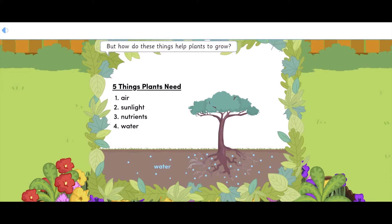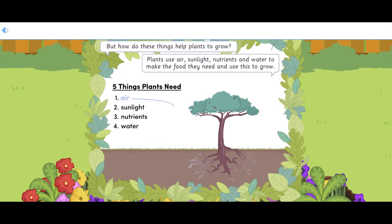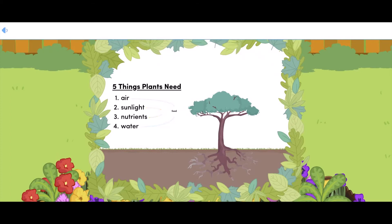But how do these things help plants to grow? Plants use air, sunlight, nutrients and water to make the food they need and use this to grow. I see, Granny. But what is the fifth thing that plants need to grow?